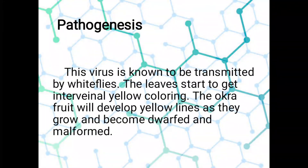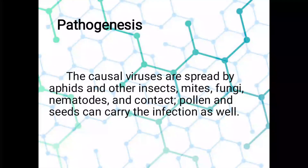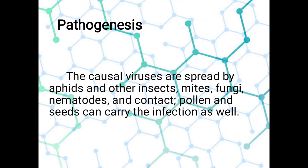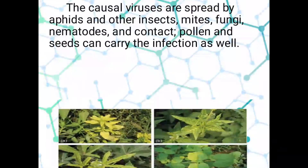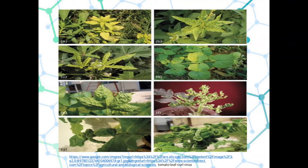Regarding pathogenesis: this virus is known to be transmitted by whiteflies, causing the okra fruit to develop yellow lines, becoming dwarf and malformed. The causal viruses are spread by aphids, other insects, mites, fungi, nematodes, and contact — pollen and seeds can carry the infection as well. So it's not only the leaf that is affected by this virus, but the whole plant. Look at the image to see what happens during infection.